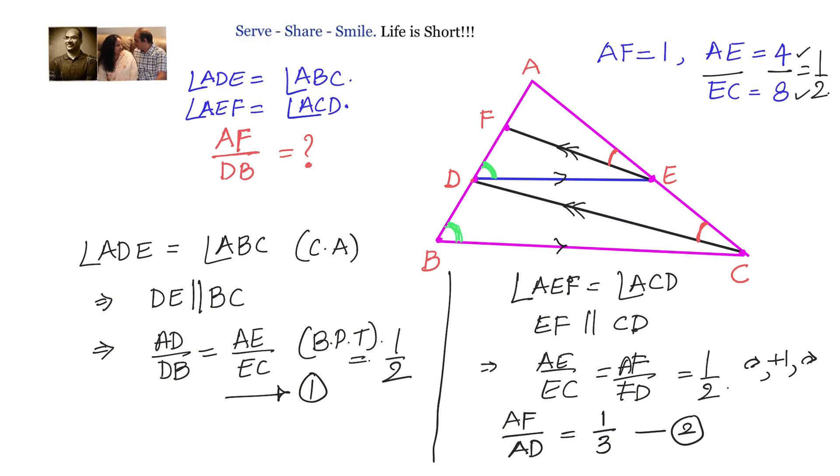We have AF by AD equals 1 by 3, and we have AD by DB equals AE by EC which equals 1 by 2. So we will multiply these two. AF by AD multiplied with AD divided by DB, AD cancels, we get AF by DB, and that equals 1 by 3 times 1 by 2 which is 1 by 6. So AF by DB is 1 by 6.